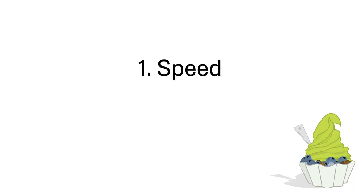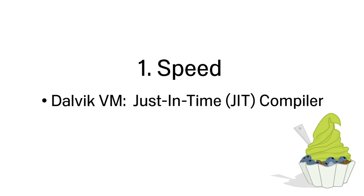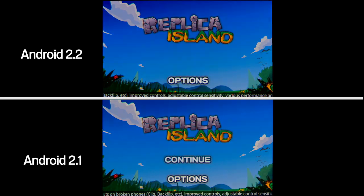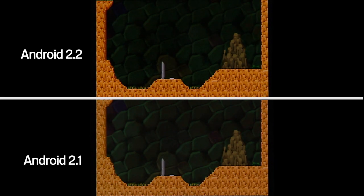We're working to continue improving overall speed and performance on Android. In Android 2.2, the newly introduced Dalvik JIT compiler delivers a 2-5x performance boost to CPU-bound code compared to Android 2.1. In this demo version of the game Replica Island,